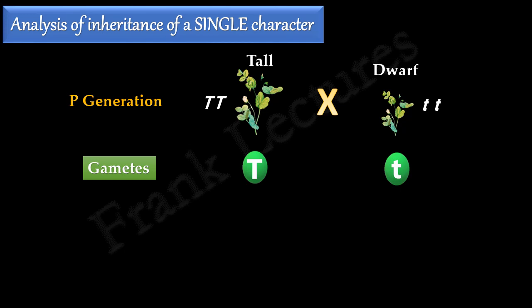After fertilization, the F1 progeny of this cross consisted of all tall plants. And these tall plants were heterozygous for the gene for stem length. That means, the genotype of this plant consisted of one dominant and one recessive allele.